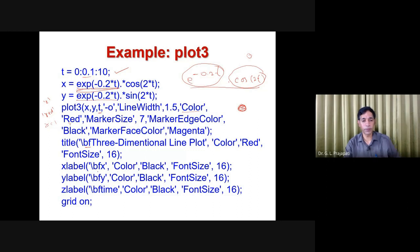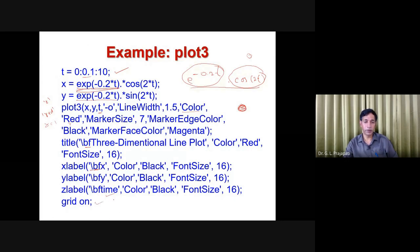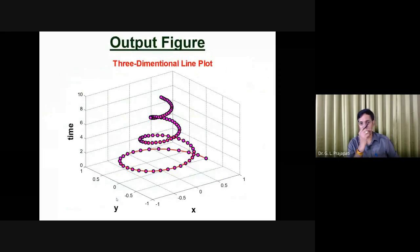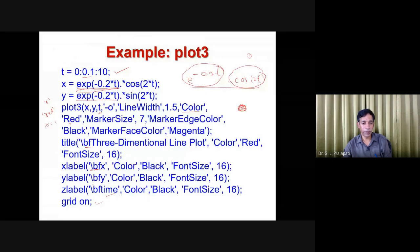You label the x-axis in bold face with the text 'x', color black, font size 16. Similarly, the y-axis label is in bold face, color black, font size 16. The z-axis is labeled 'time' in bold face, color black, font size 16. Grid is turned on with 'grid on'. Running the whole code produces the output graph, where you can see the x-axis, y-axis, z-axis labeled with color black at font size 16, and the grid is on.